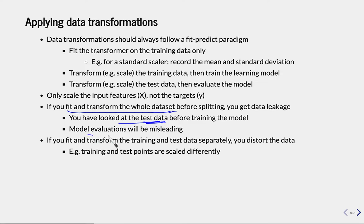It means that the evaluations you get may be misleading and are typically optimistic. The model has seen more data — it's seen the test data. It may actually learn something from the test data. For instance, if your test data is slightly differently scaled, you would have that information at train time, which you're not allowed to. So your models may actually perform better than they should. That's why you should only fit on the training data and then transform both training and test data afterwards.